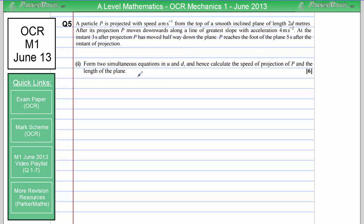In part 1, we need to form two simultaneous equations in u and d and hence calculate the speed of projection of P and the length of the plane. So there's actually two things we want to work out in this question: the speed of projection and the length of the plane.